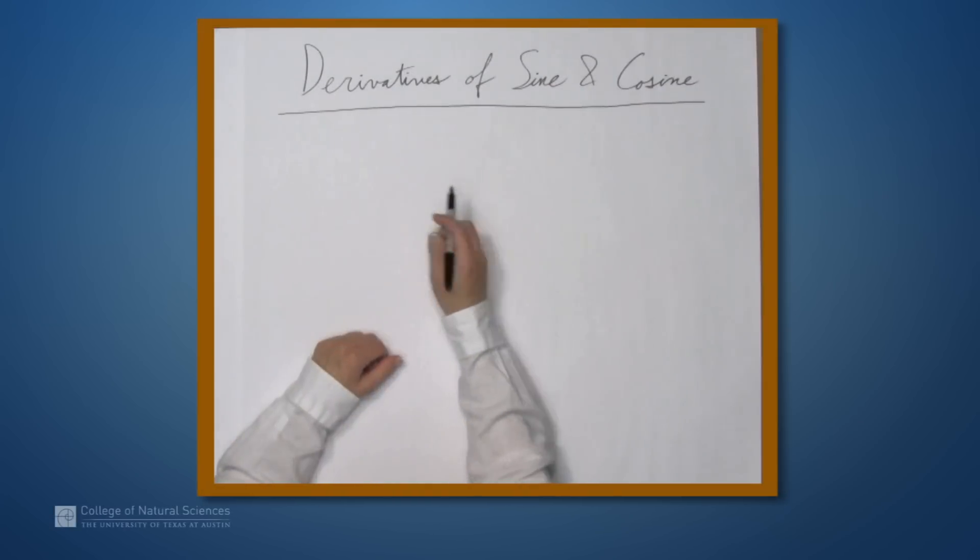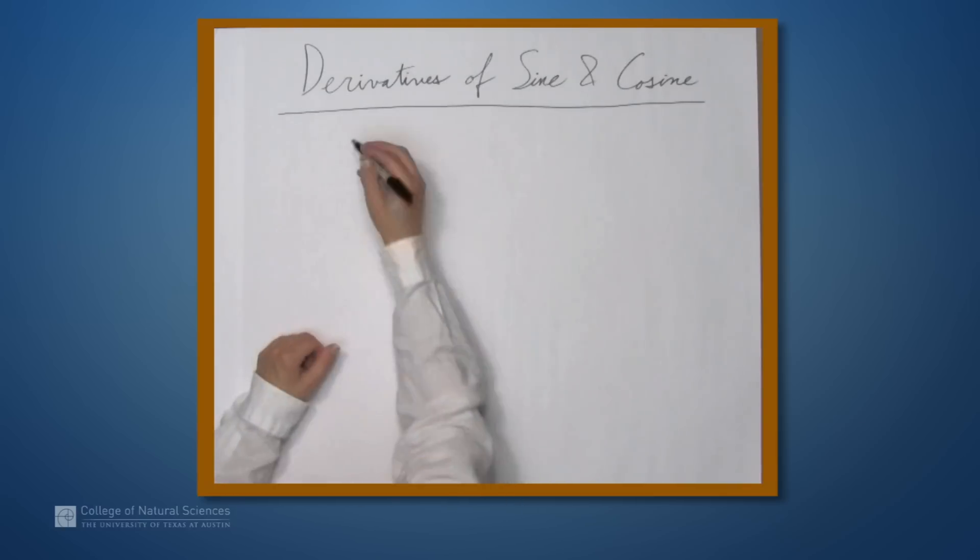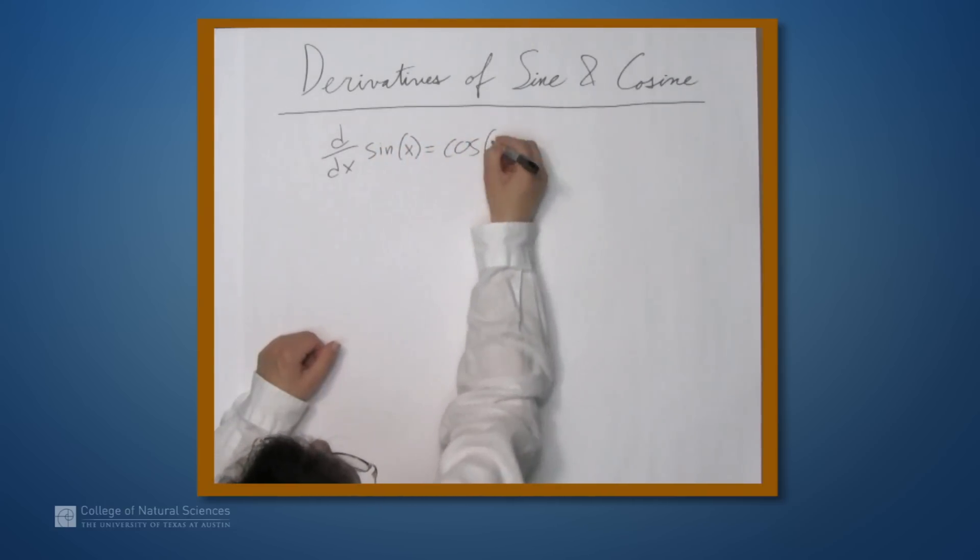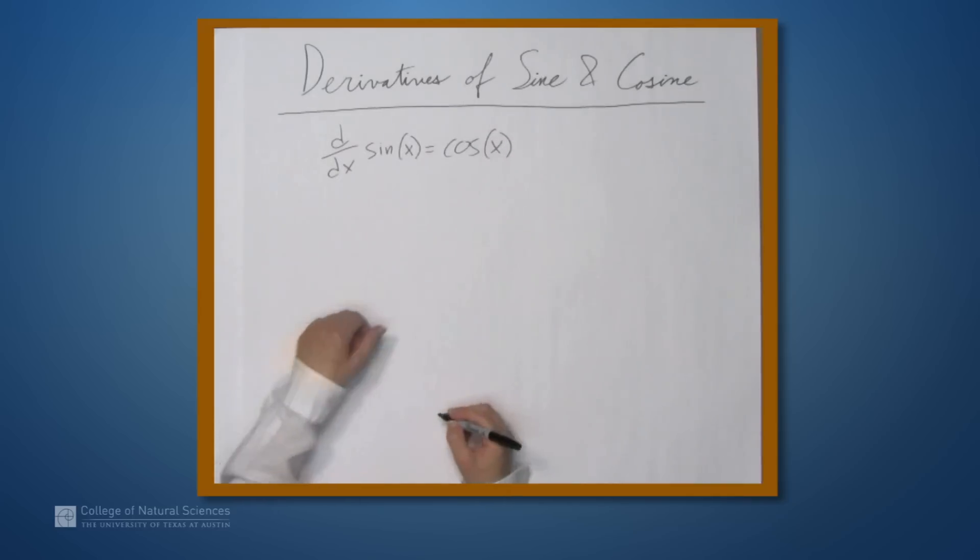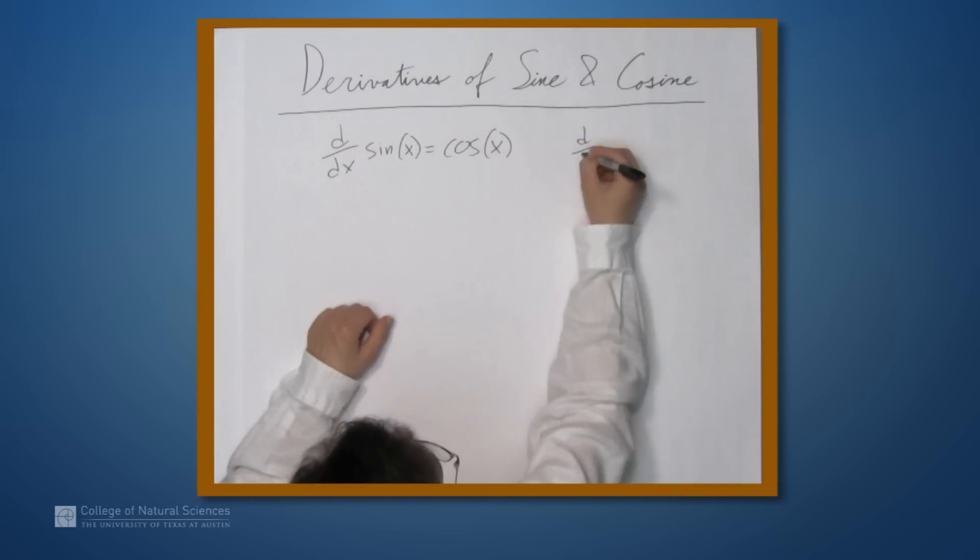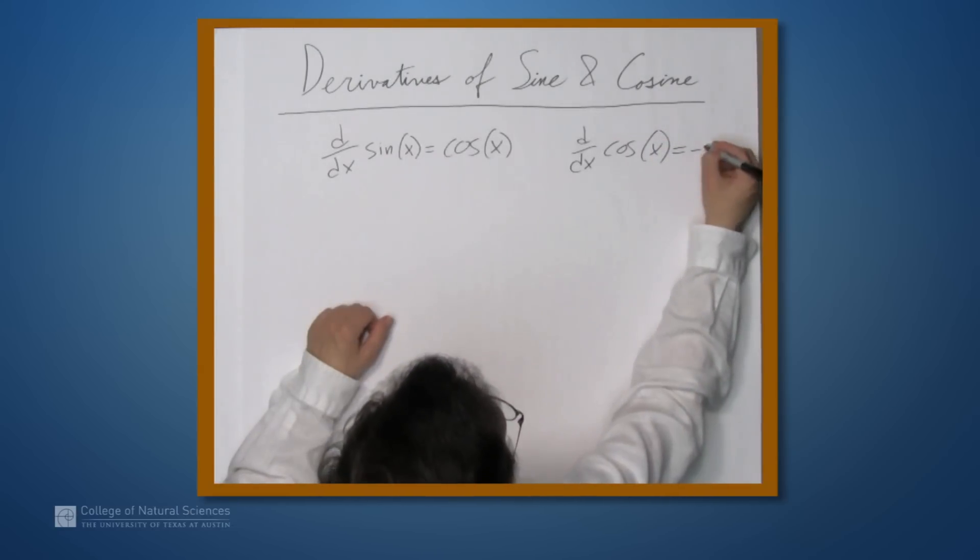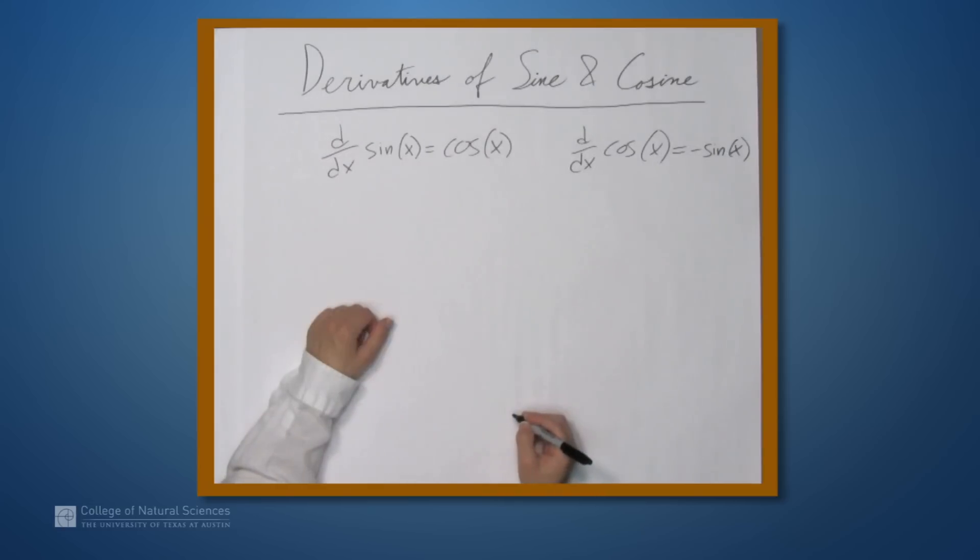So we're here at the example table, and in this video we're going to look at the derivatives of sine and cosine. So let's just remind ourselves of what those are. The derivative of sine of x is cosine of x. And the derivative of cosine of x, it's not quite sine of x, but almost, it's negative sine of x.